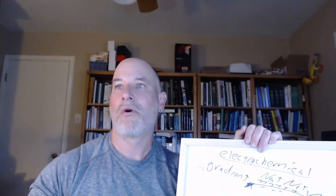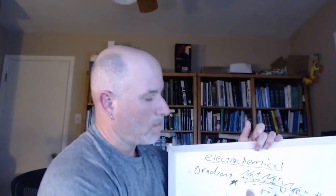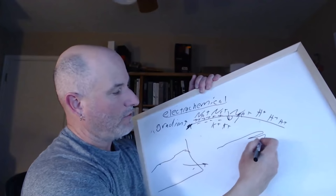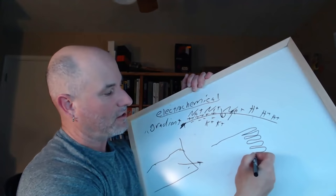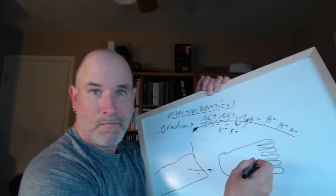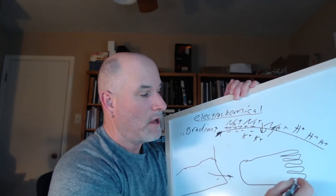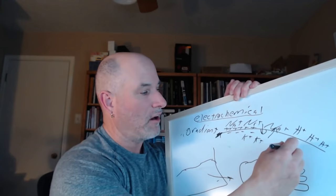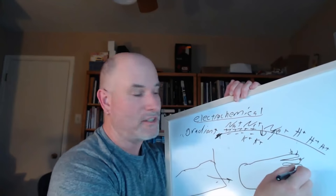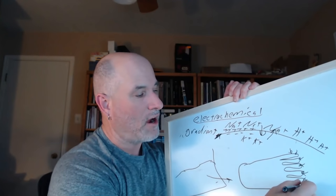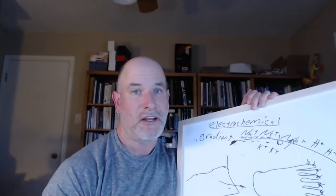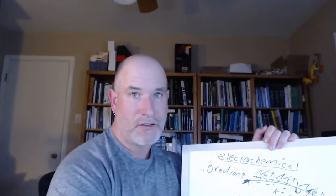Do we need to know why microvilli are important in the small intestine? Yes, actually. Microvilli are incredibly important — they are projections on eukaryotic cells that increase surface area without increasing much volume. By increasing surface area, you increase the area available for absorption, which is why they're in your intestines. You'll definitely need that for plant and animal form and function.